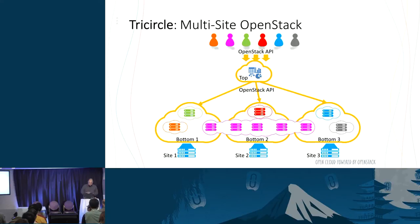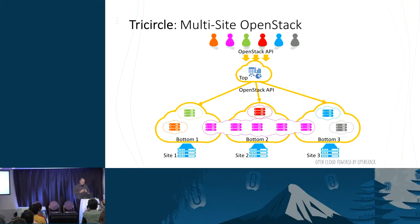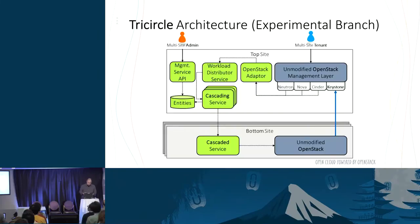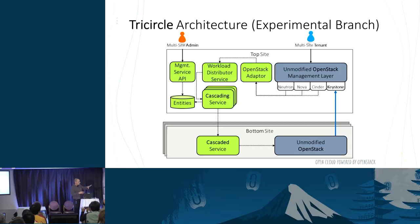Let's talk about Tricircle. The picture is very similar to what I showed before, but the bottom sides are all OpenStack. Tricircle is part of OpenStack — it's actually a project that already has a production environment. It essentially gives you one top OpenStack to manage multiple bottom OpenStacks. You have a top site with multiple bottom sites. The top site has an unmodified OpenStack management layer — the APIs of OpenStack without any modifications.